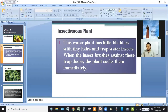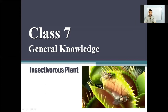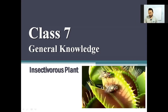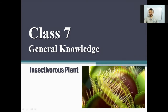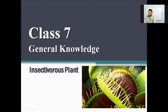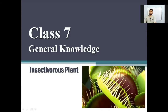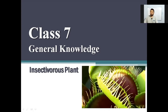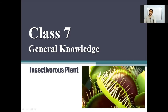Hello and welcome back my dear students. In this video we will learn about some unusual plants. These plants are also known as insectivorous plants or carnivorous plants. These plants derive some or more of their nutrients from trapping and consuming animals or protozoa, typically insects and other organisms.